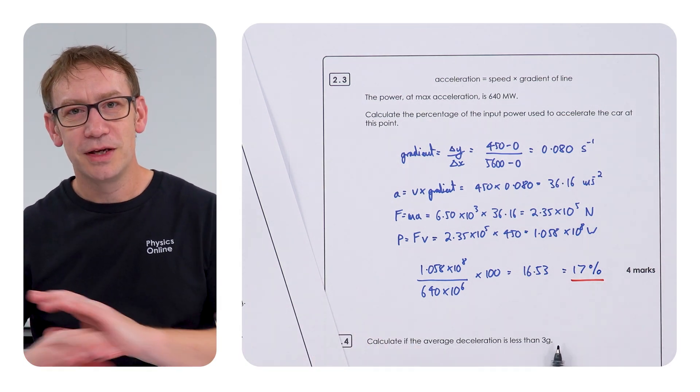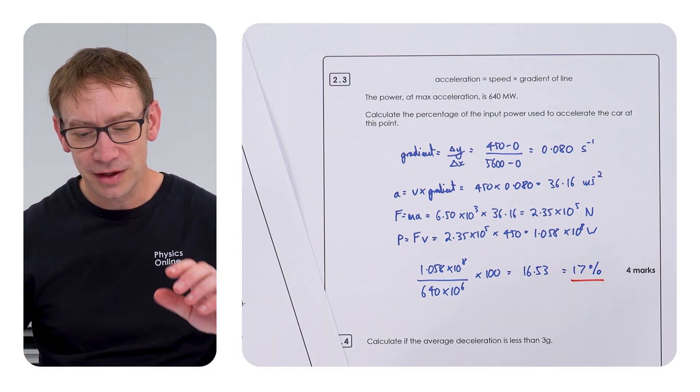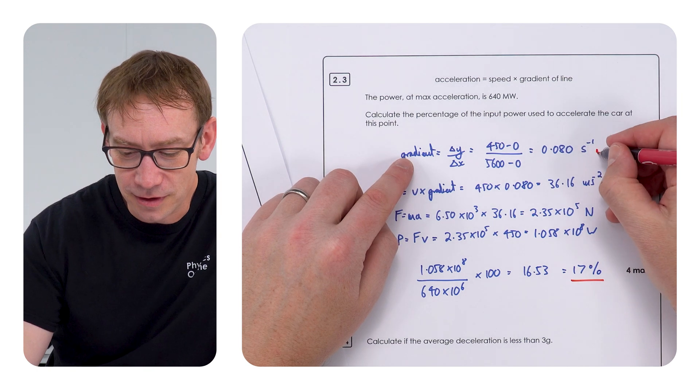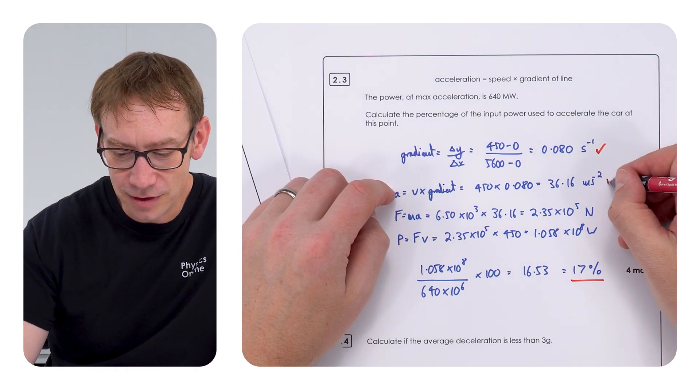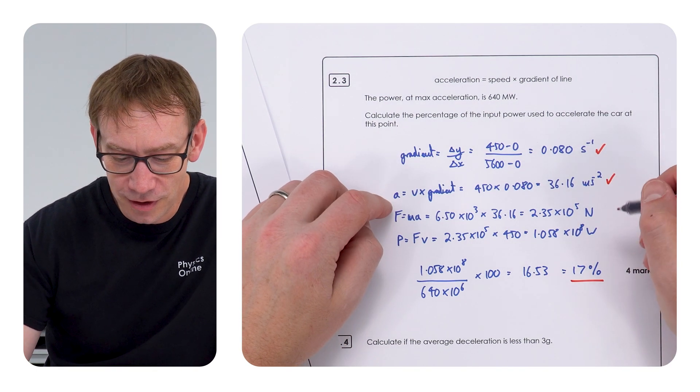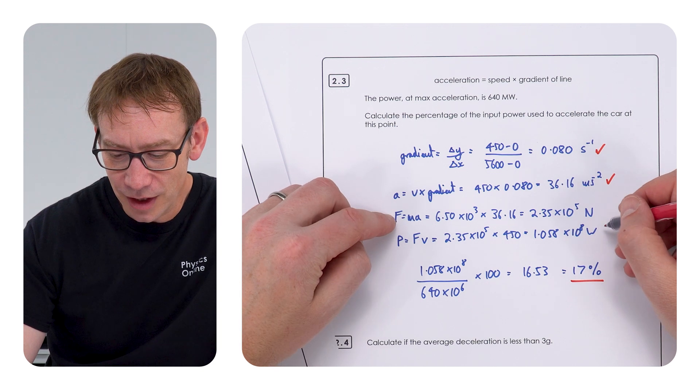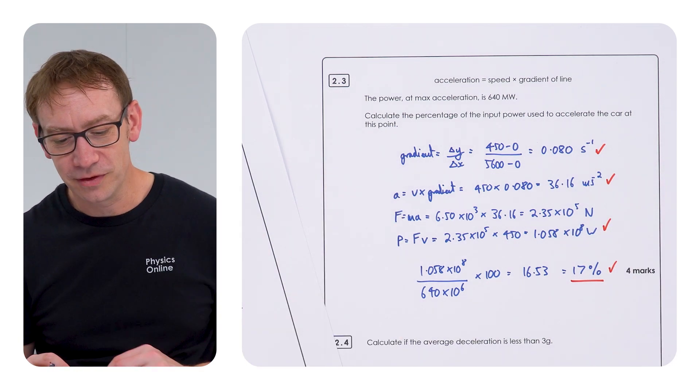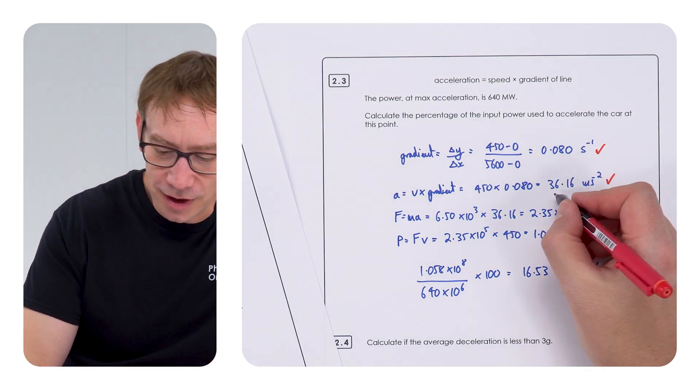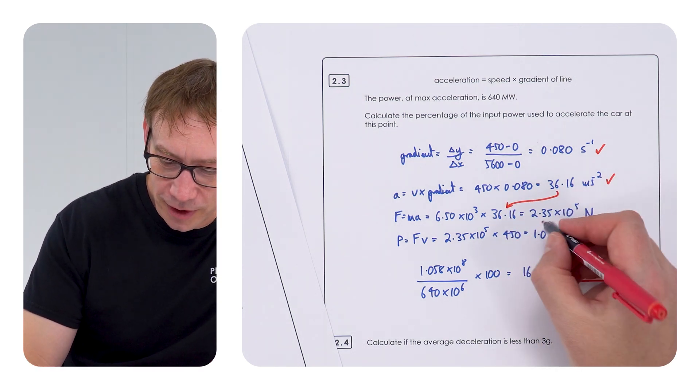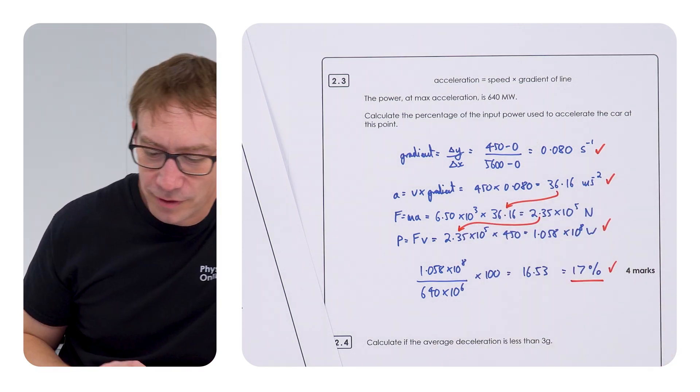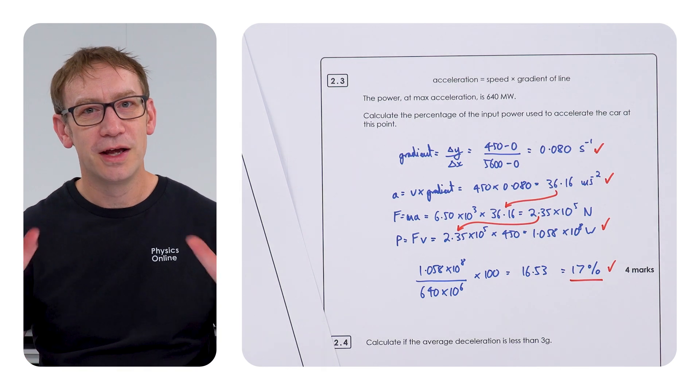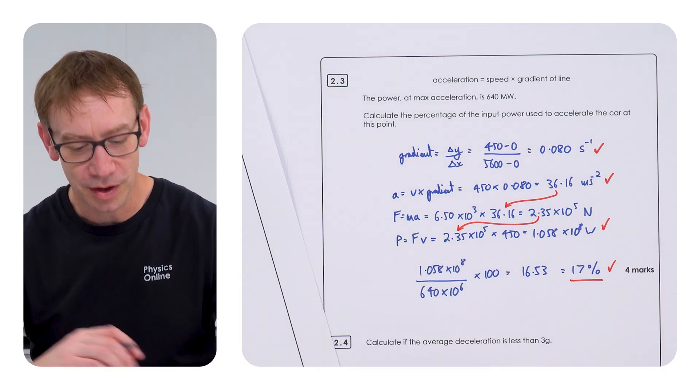So, if you do that, you're going to get the full four marks. Basically, you're going to get a mark for looking at the gradient. You're going to get a mark for calculating the acceleration, another mark for calculating the power from the force, and then, of course, your final mark for that 17%. And all you're thinking about is using one value to work out the next, and to work out the next, and so on. If you're not sure, just start, and then maybe the answer might pop out.